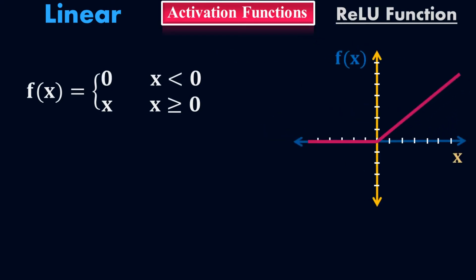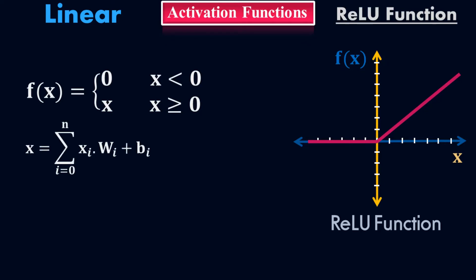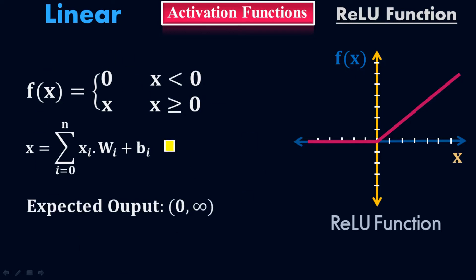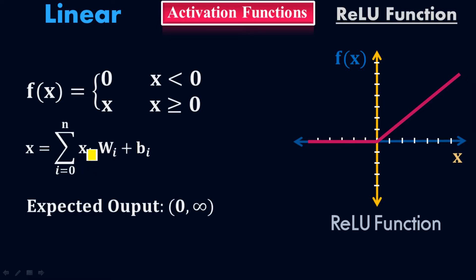Here is the typical graph of the Rectified Linear Unit activation function — the ReLU activation function. We already know that x equals the summation of the input times weight. The expected output will be from 0 up to positive infinity. This is the mathematical formulation of ReLU, where f(x) is a piecewise function: f(x) = 0 when x is less than 0, and f(x) = x when x is greater than or equal to 0. Whatever value you input, if x ≥ 0, it returns exactly the same value. Since x is the summation of input times weight, the expected output will be from 0 up to positive infinity.